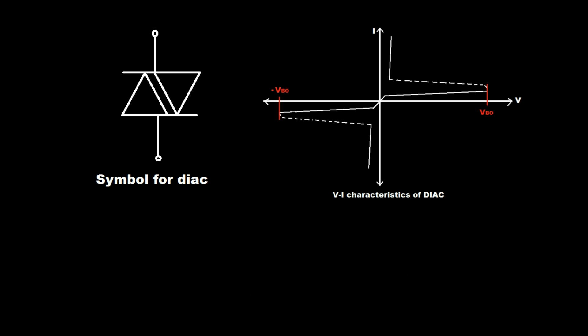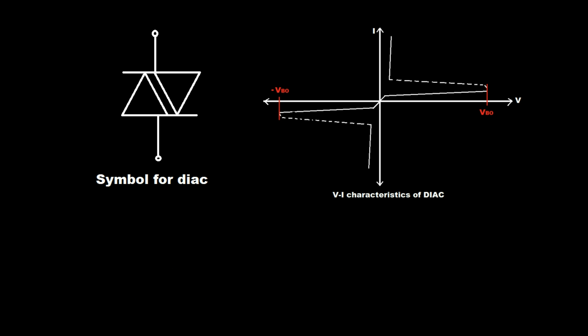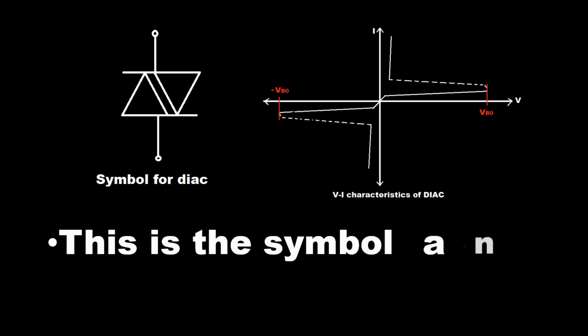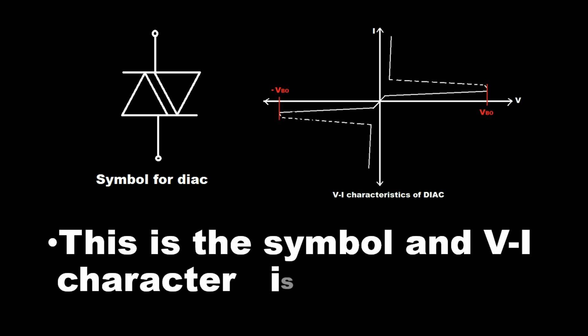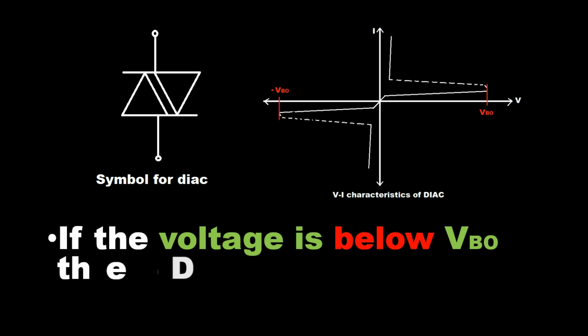There is no control terminal on DIAC. This is the symbol and VI characteristics of DIAC. If the voltage is below VBO, the DIAC is in off condition.